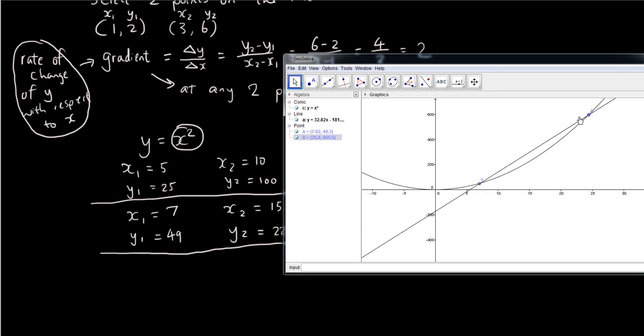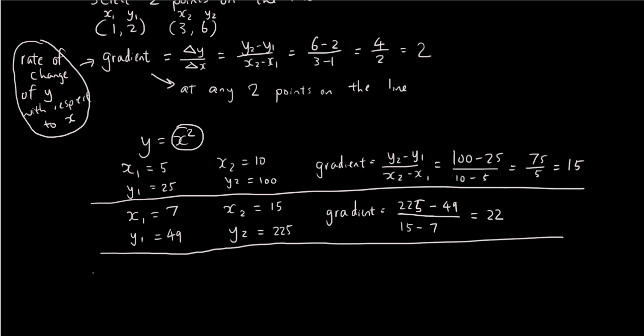Alright, so basically with the quadratic equation, so far with our knowledge, we can, what we can find is what we call it as the average, average rate of change between two points.